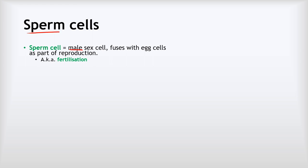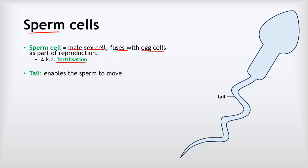Our second specialised cell is the sperm cell. The sperm cell is the male sex cell and its job is to fuse with an egg cell as part of reproduction — we call that process fertilisation. In terms of adaptations, the most obvious one is its great big long tail that enables the sperm to swim. Millions of sperms are ejaculated into the female and they swim up through the vagina, through the cervix, into the uterus, swimming around at random. Because there are so many millions of them, eventually some are bound to bump into the egg cell.